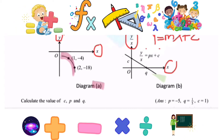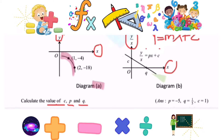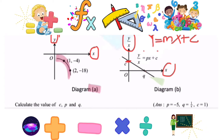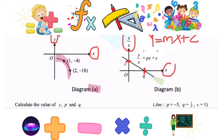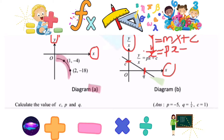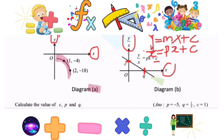We need to find the values of c, p, and q. First, we need to find the gradient for the straight line. Since the big Y is Y over X, the gradient will be p and the intercept will be c.